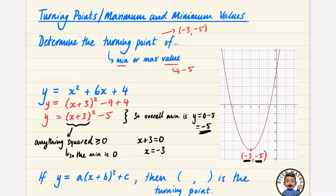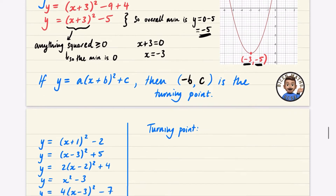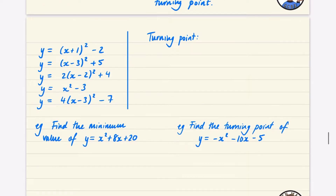For our notes: if y = a(x + b)² + c, then the turning point has y-coordinate c and x-coordinate -b. Rather than memorising this formula, I prefer to reason it out — the smallest value of (x + b)² is zero, giving y = c, and that happens when x = -b.